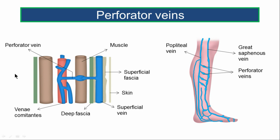This picture shows a section through the limb. Starting from the skin, deep to it lies the superficial fascia with the superficial vein. Deeper is the deep fascia, and beneath that are the muscles with the neurovascular bundle — showing the deep artery and the venae comitantes (deep veins) around it. A communicating vein connecting the superficial vein to the deep veins is the perforator or communicating vein.